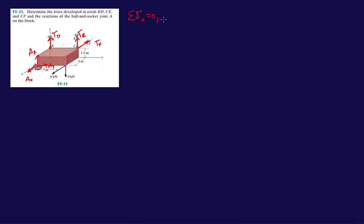Now let's start with our algorithm. Forces in the X direction: we have AX, we have a positive 6 kilonewtons going this way, and minus TF. Forces in the Y equals 0. What do we have in the Y direction? We have AY, and that's it. So AY equals 0.